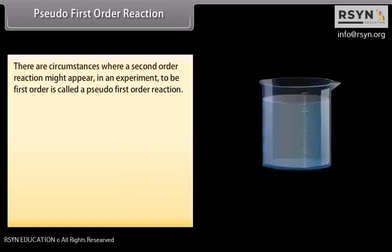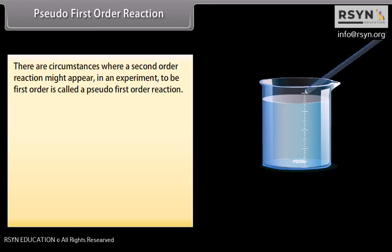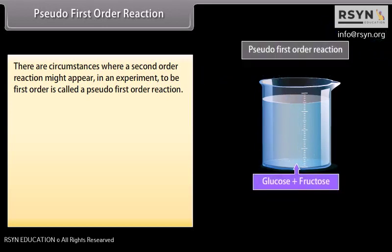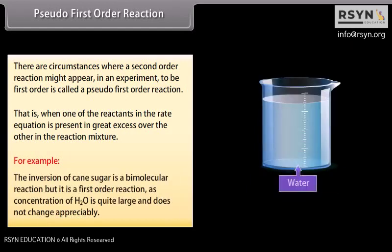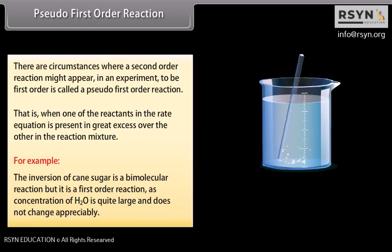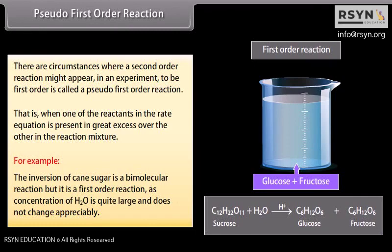Pseudo-first-order reaction: there are circumstances where a second-order reaction might appear in an experiment to be first-order — this is called a pseudo-first-order reaction. This occurs when one of the reactants in the rate equation is present in great excess over the other. For example, the inversion of cane sugar is a bimolecular reaction, but it is first-order because the concentration of H₂O is quite large and does not change appreciably.